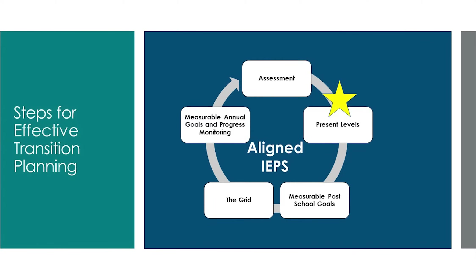This section of the IEP provides a summary of a student's performance in his or her current educational program and indicates the student's instructional and functional levels. This should include information from classroom performance and results of any academic achievement or functional performance assessments that have been administered. Information contained in this section provides baseline data for developing the IEP and writing measurable annual goals, and should also consider the most recent results of an initial evaluation report or re-evaluation report.